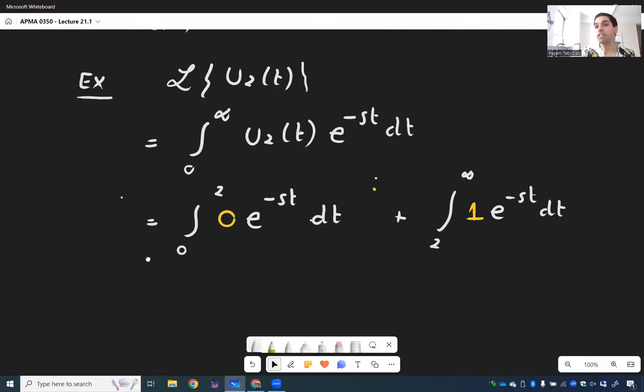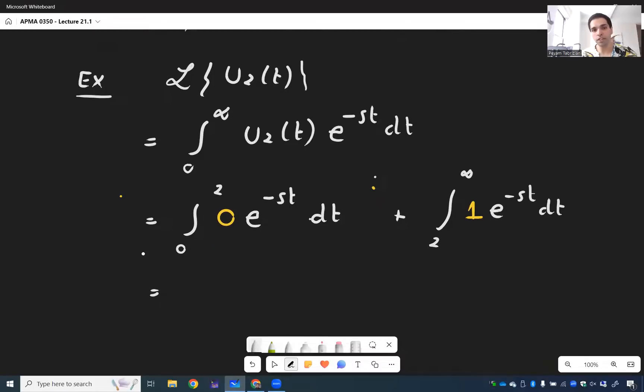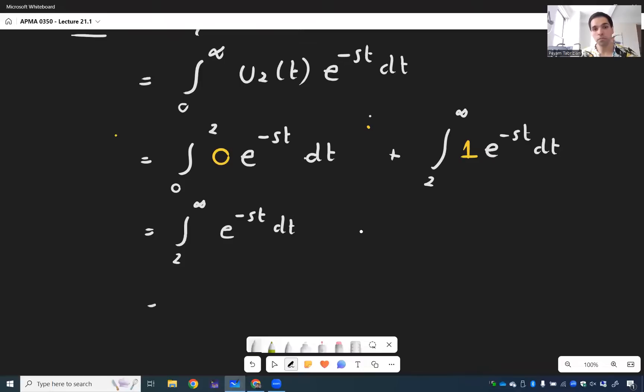Now, of course, the integral of zero is zero here, so we're just left with the integral from two to infinity, E to the minus ST DT, which we just need to anti-differentiate. So once again, since we're integrating with respect to T, the anti-derivative is E to the minus ST over minus S.